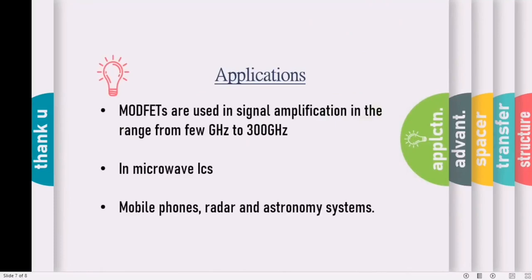So next question is, where we can use these high-speed transistors? MODFETs are used in signal amplification in the range from few GHz to around 300 GHz. And since these transistors can work under very high frequencies, it can be used during the fabrication of microwave ICs. So it's very important in microwave industry. And it is also used in cellular phones, then in radar systems, in communication devices in space stations.